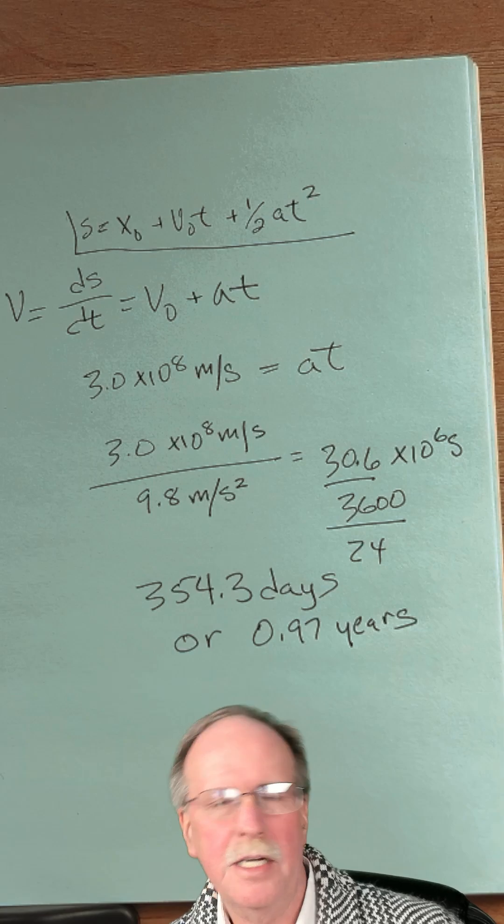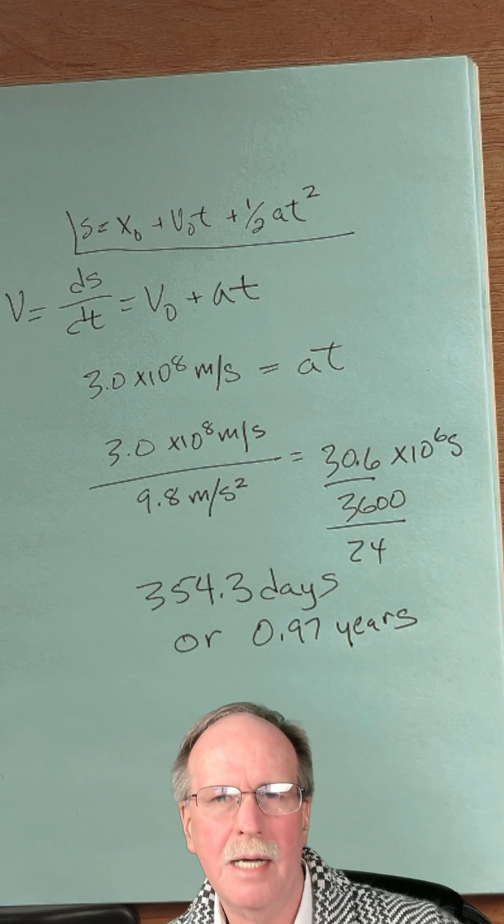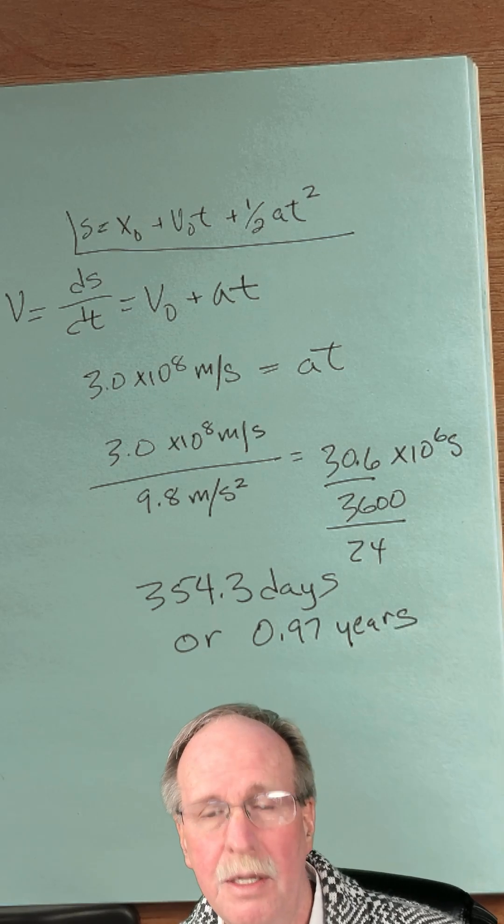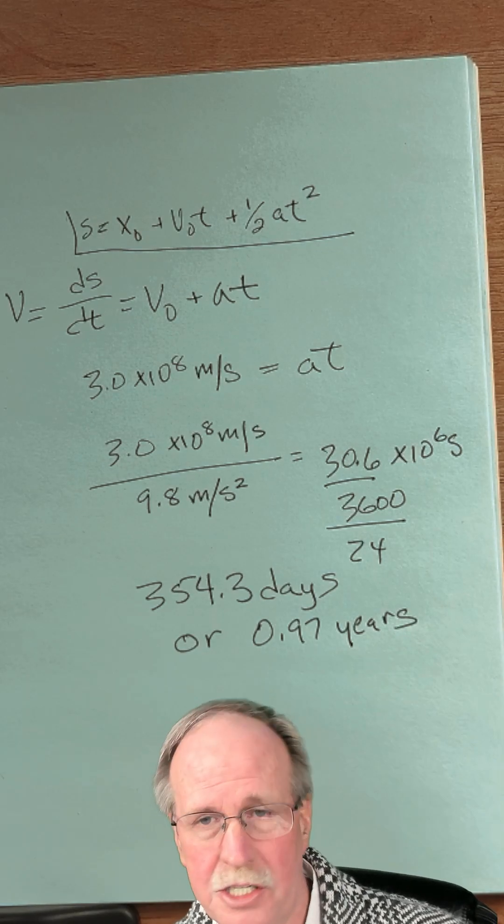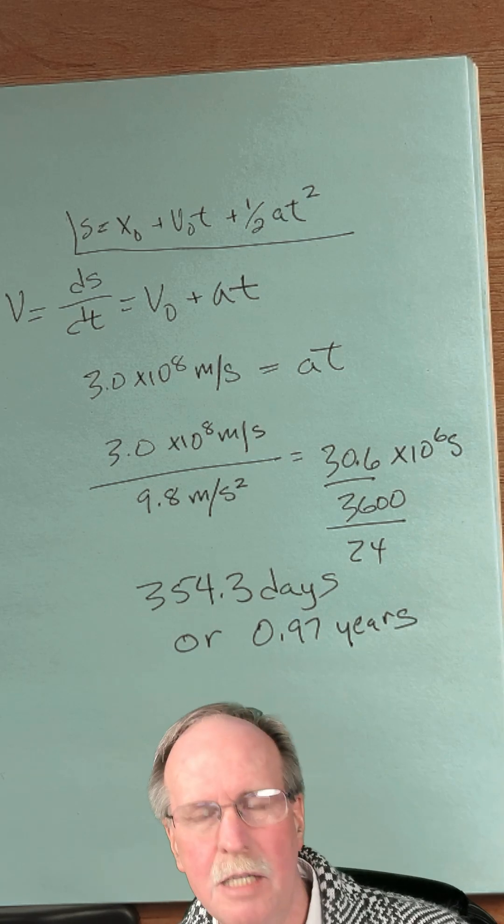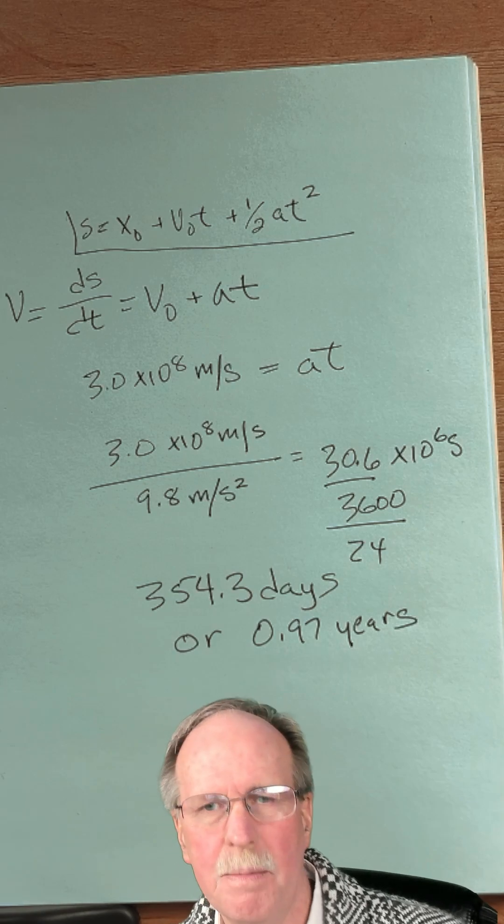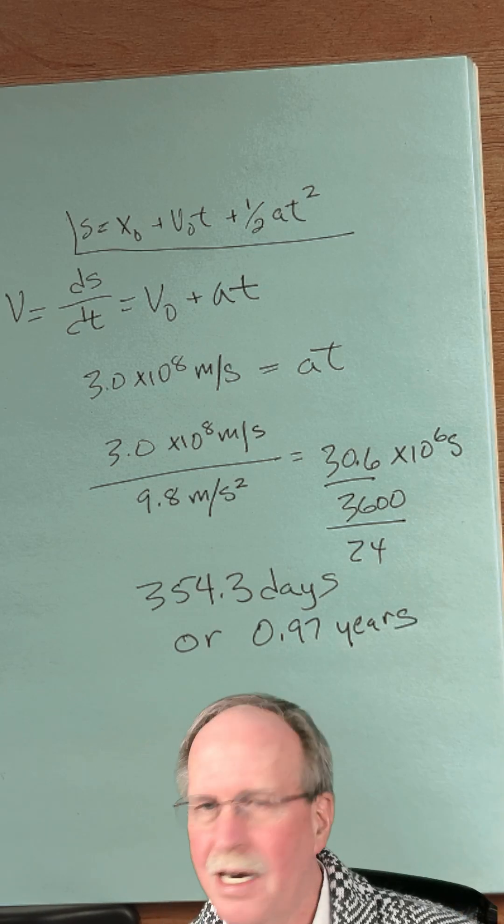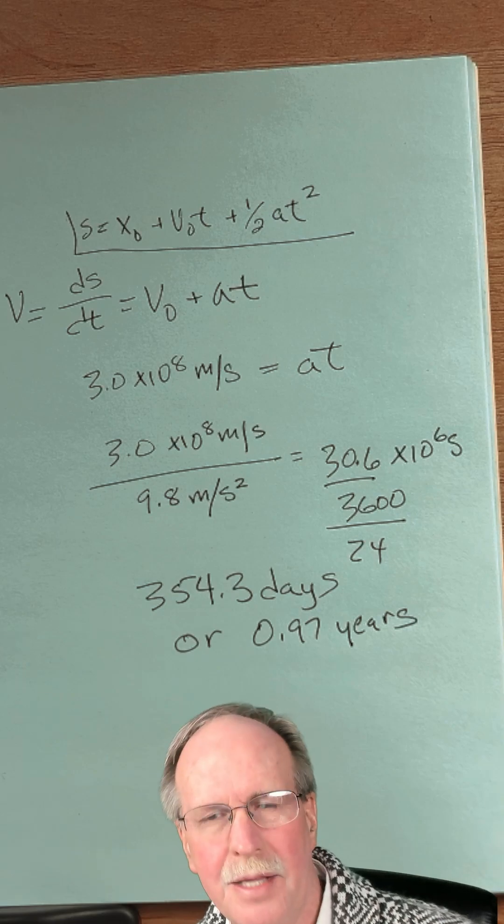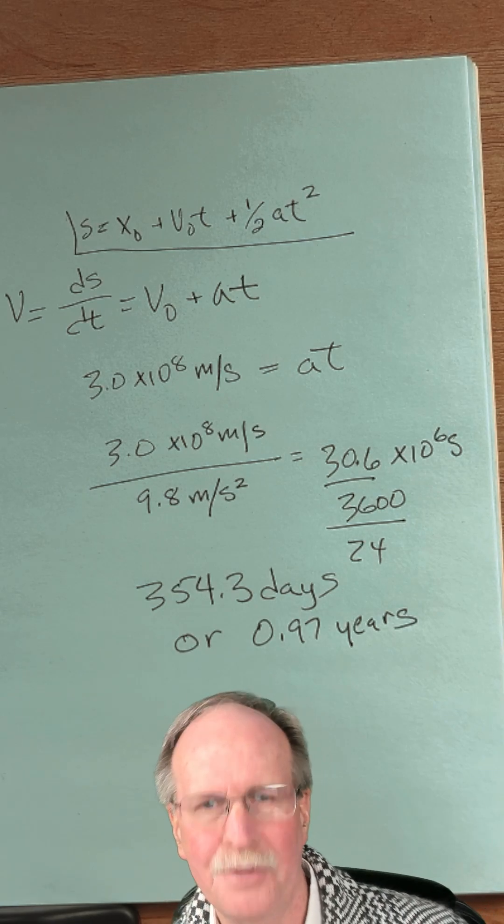That means that if the earth initially was at a velocity of zero and it accelerated at 9.8 meters per second squared to give us the illusion of gravity, we would reach the speed of light in less than a year. Now obviously there are relativistic corrections that need to be made, and quite frankly one of the reasons that we would stop is our mass would become infinite. But I just wanted to demonstrate why the upward acceleration of the earth at 9.8 meters per second squared is not a substitute for gravity.